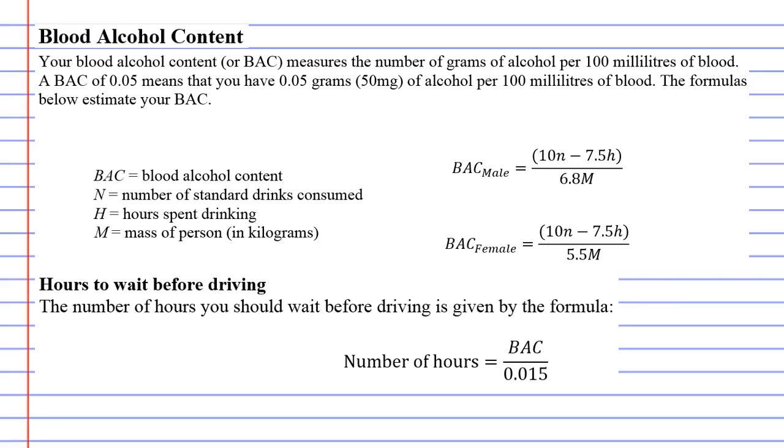In Australia, 0.05 is the limit. If you go beyond 0.05 you're not allowed to drive. It's important to know what your BAC is so you know whether you're okay to drive a vehicle. We actually have some formulas that can help work these out.